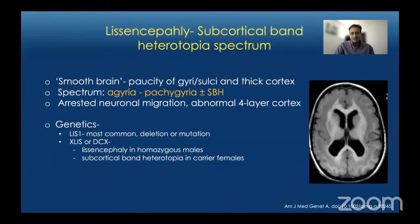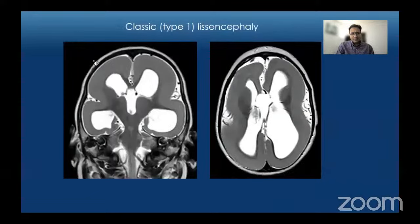Our case was a three-year-old female with pachygyria and subcortical band heterotopia. This is an example of classic lissencephaly where you have a smooth brain with diffuse thick cortex and very shallow sylvian fissures giving it a figure-of-eight appearance.